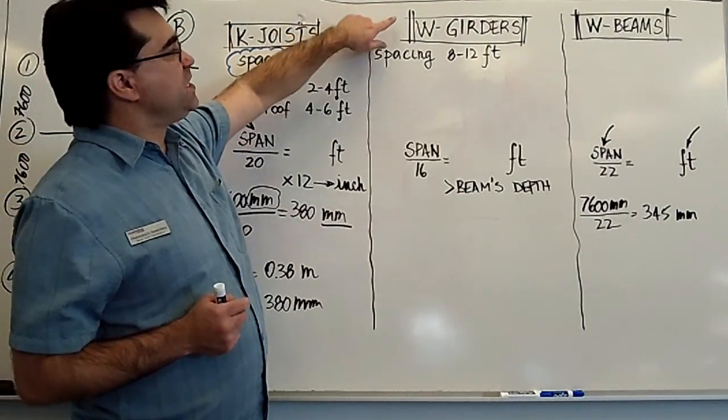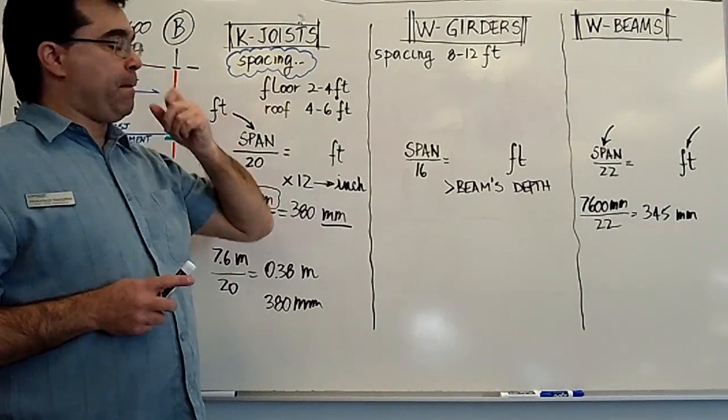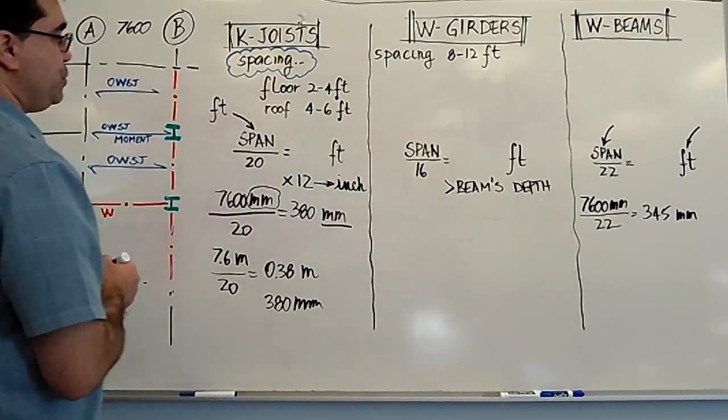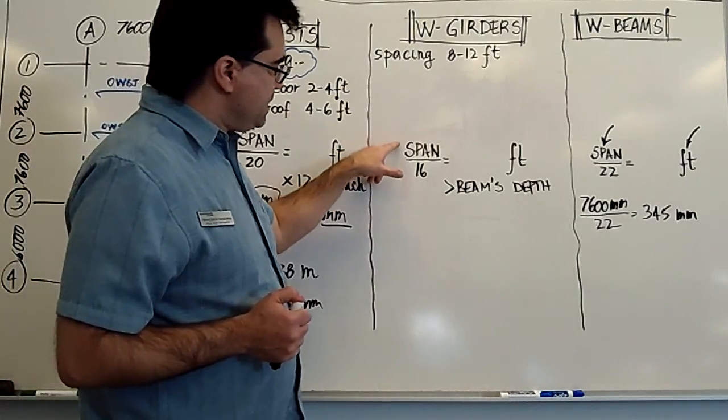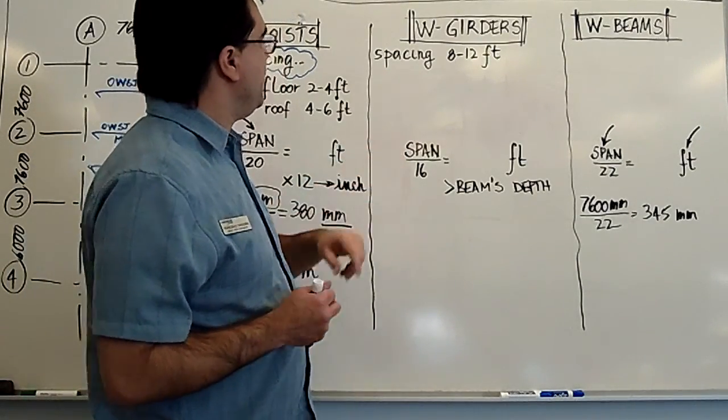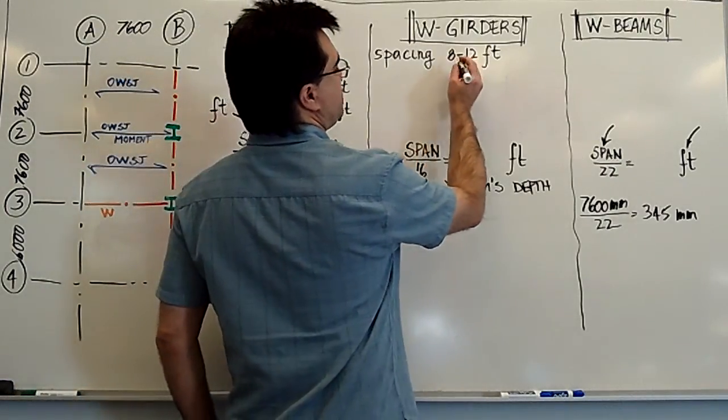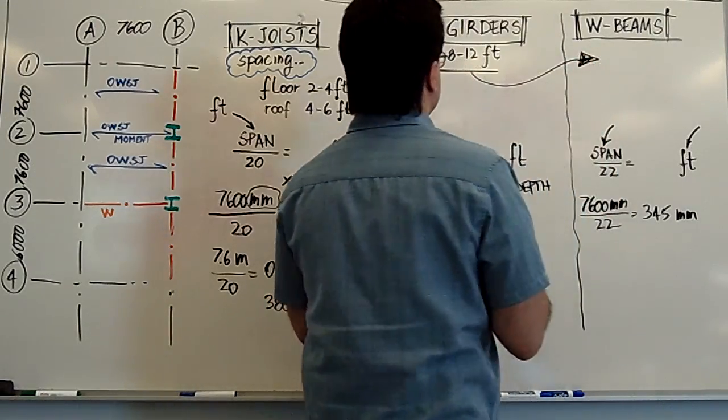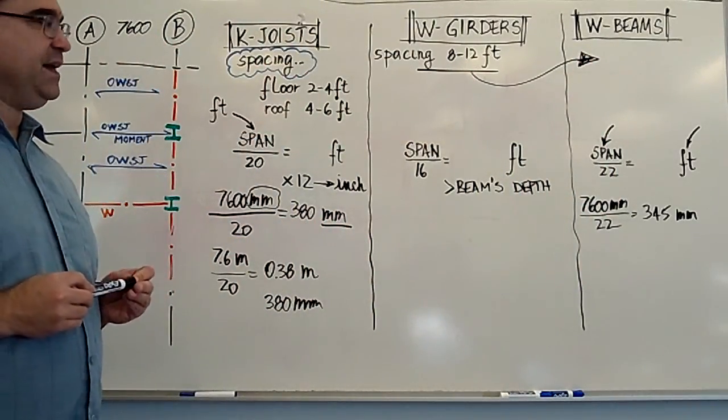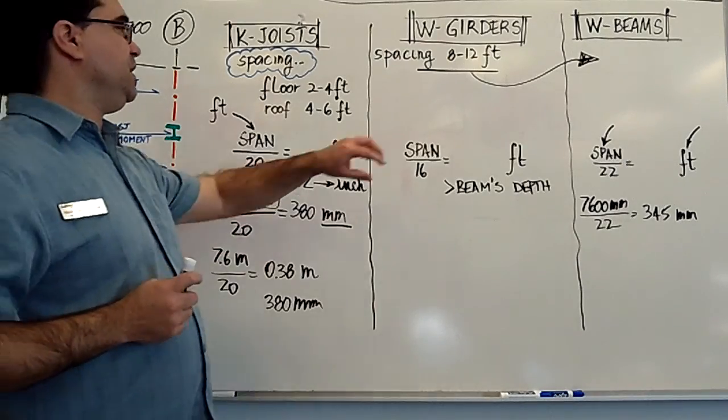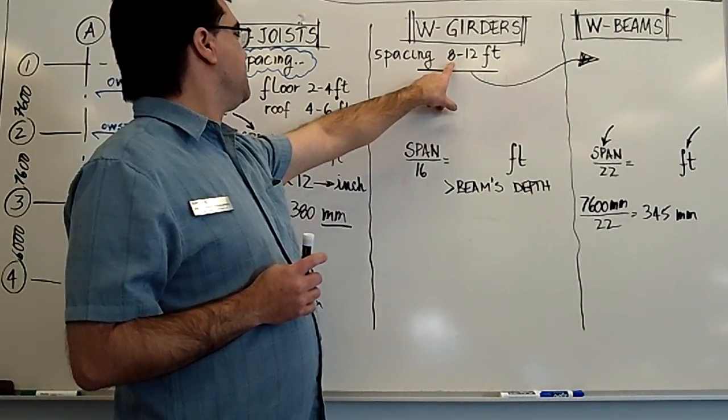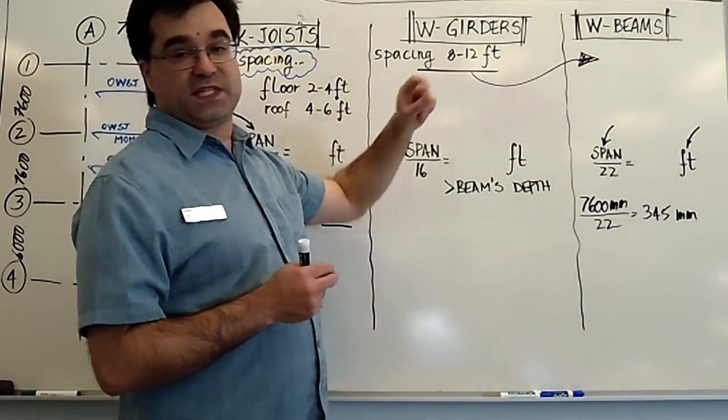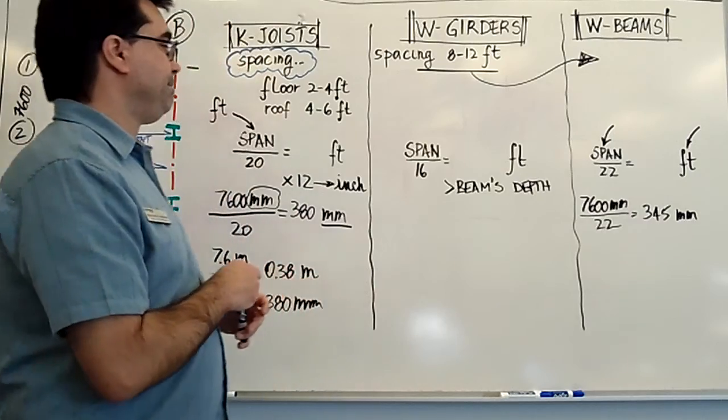Now, let's try approximate depth of girders. And in terms of girders, the rule of thumb is this. Oh, and sorry, I think this actually should be moved from here to here. Typical approximate spacing of beams is 8 to 12 feet. And by that, it means it's going to be, for 8 feet, it's 2,400 millimeters, approximately. And 12 feet is 3,600 millimeters, approximately.